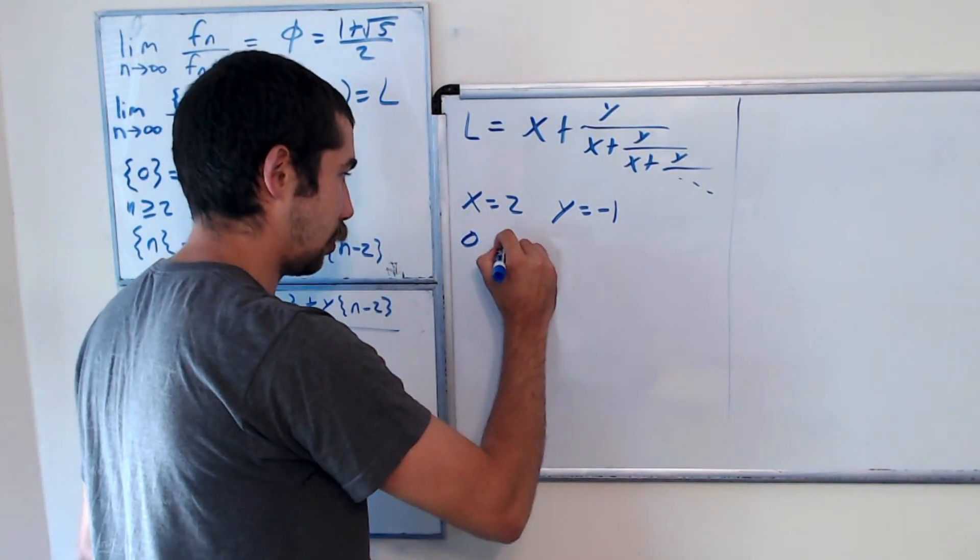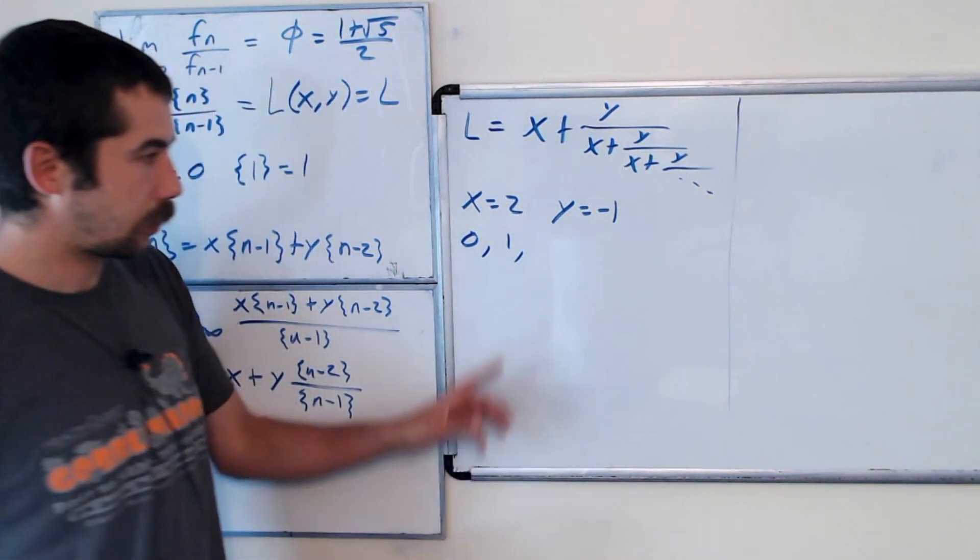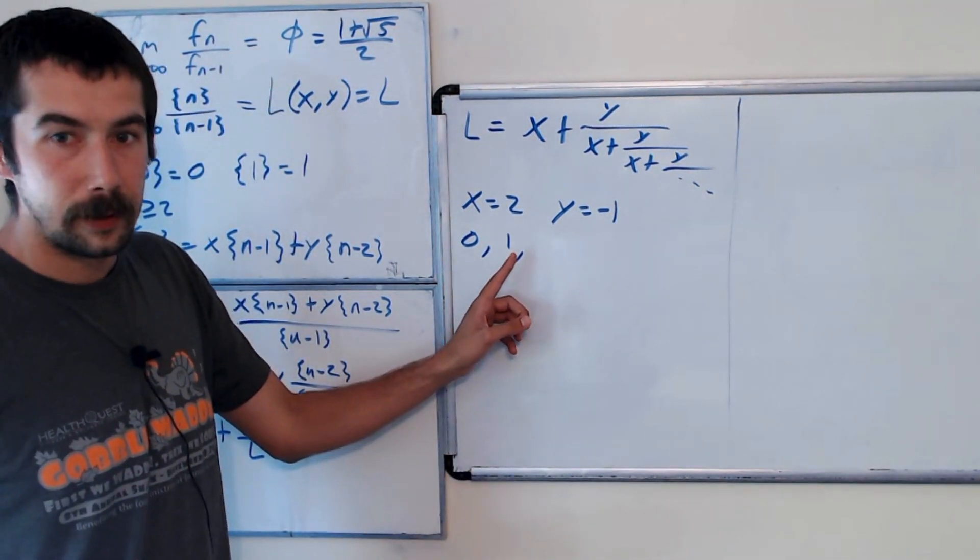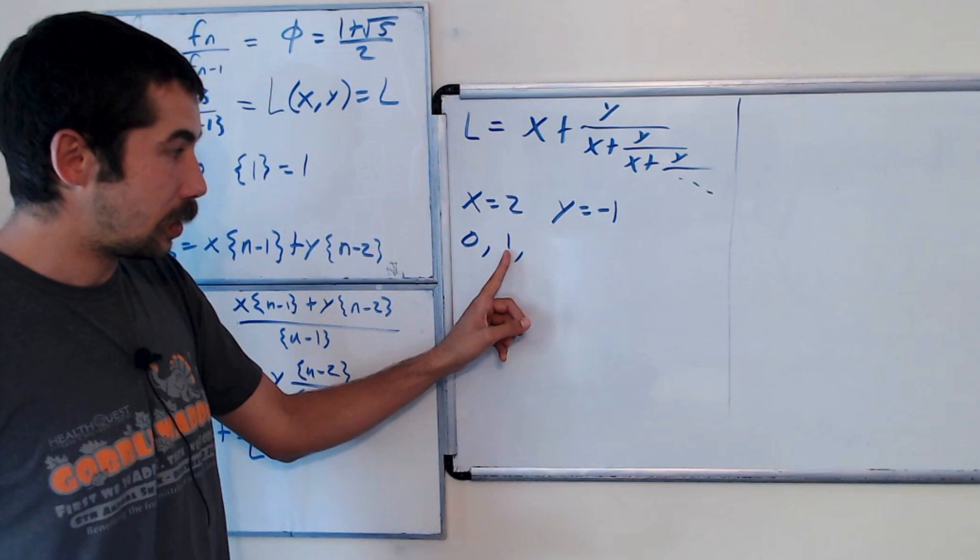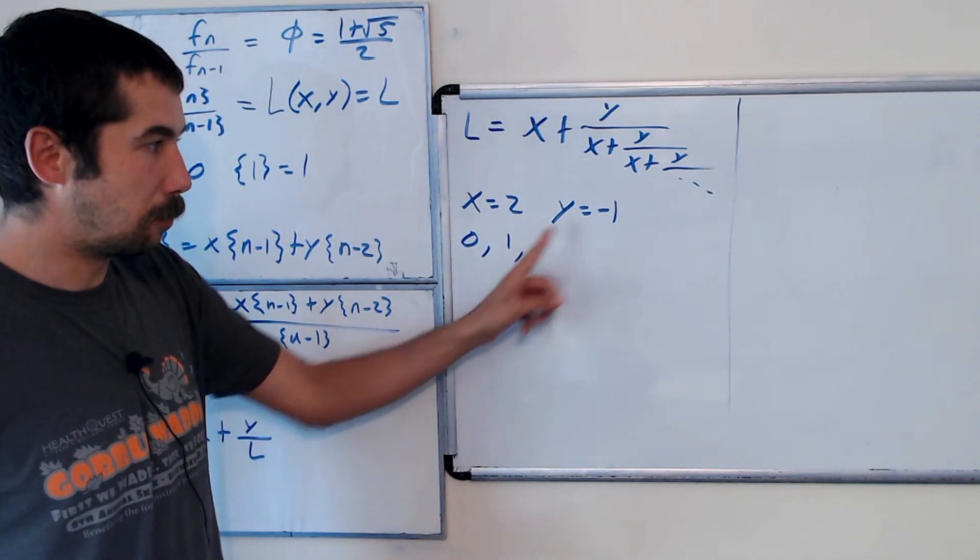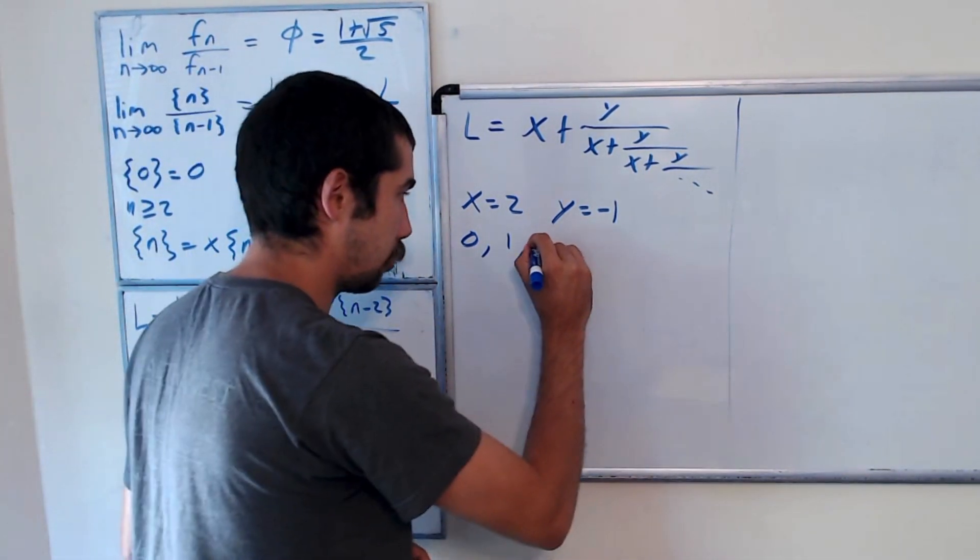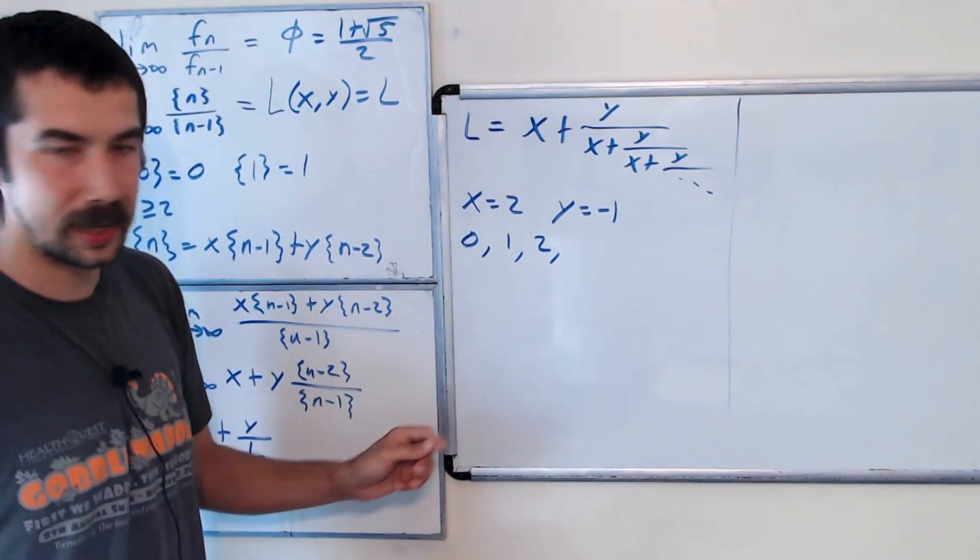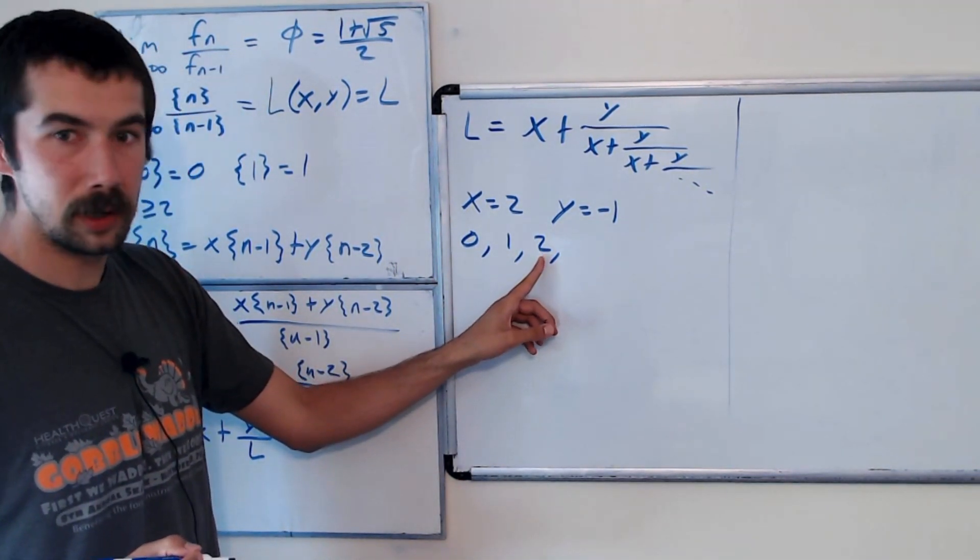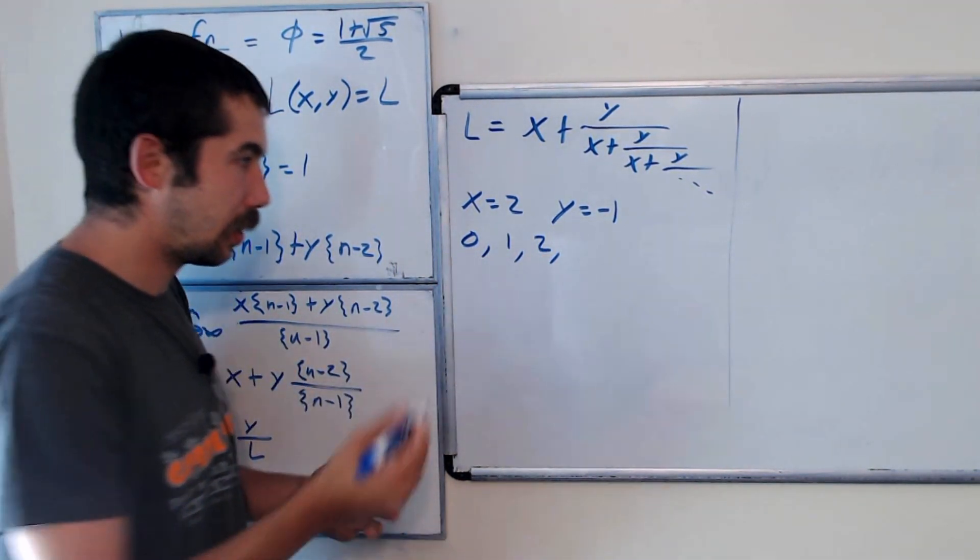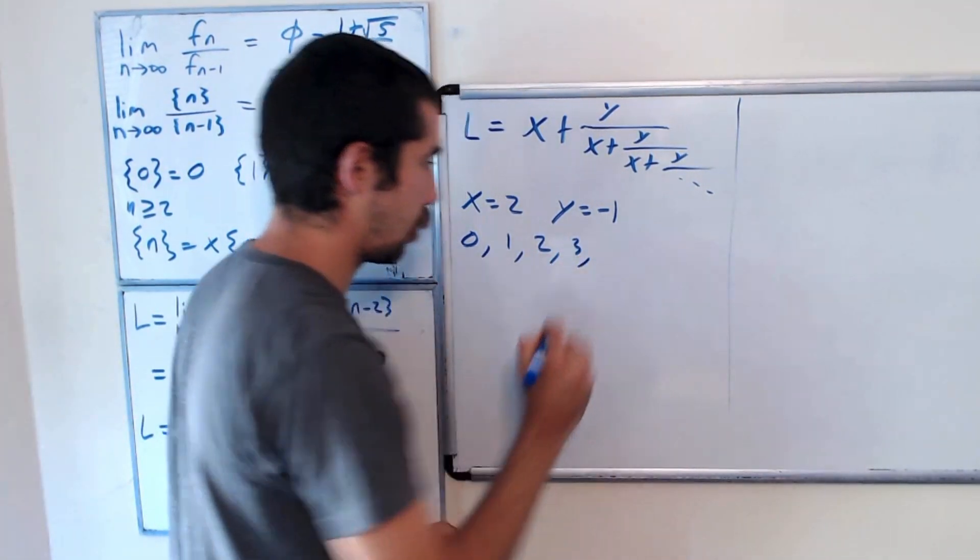Well, we start with 0, 1. We go 2 times 1 minus 0, that's 2. What's the next term? 2 times 2, which is 4, minus 1, that's 3.